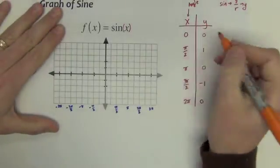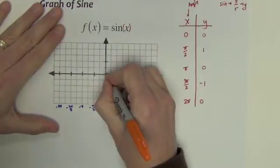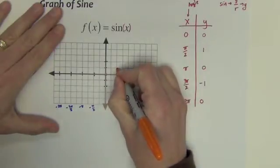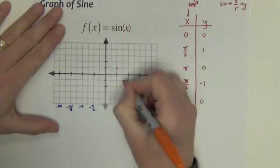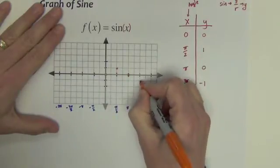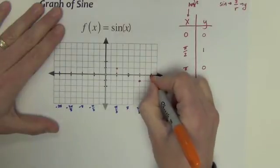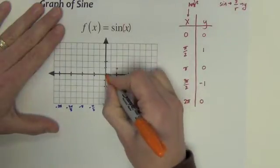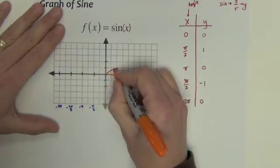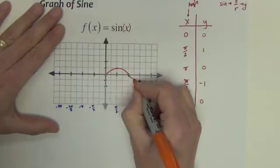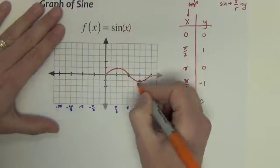So let's plot our points. We've got a point at 0, 0, right at the origin. We've got a point at pi over 2, 1. Pi is at 0, 3 pi over 2 is at negative 1, 2 pi is back at 0. And we get a graph that looks kind of like that.